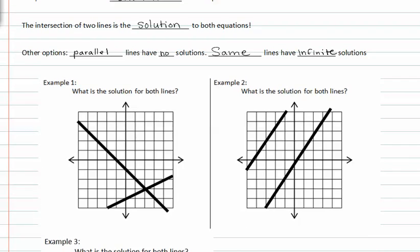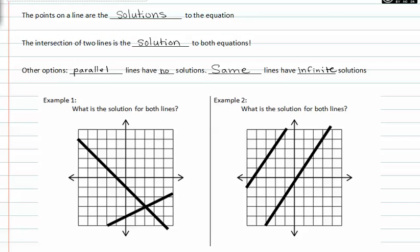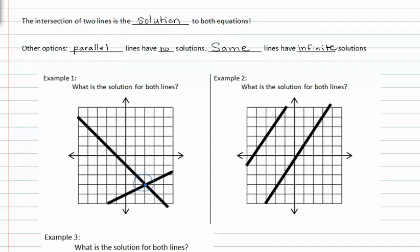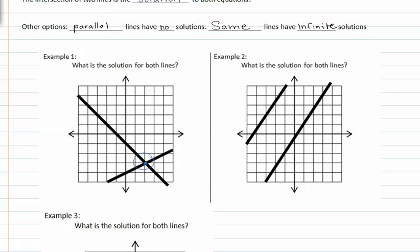In example one, we see that there are two lines on this graph. They intersect right here. At this intersection, we can find the solution to both equations. If we were to use actual equations, we would be able to solve them both simply by finding out what this point is.